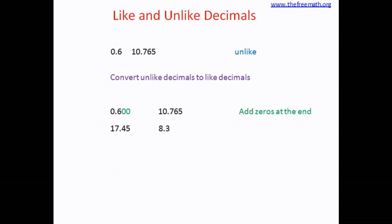Let's look at the next example: 17.45 and 8.3. Again these are unlike decimals, because there are two decimal places in the first number and one decimal place in the second number. So let's put an extra zero after 8.3 — now there are two decimal places each. So we have converted the unlike decimals to like decimals.